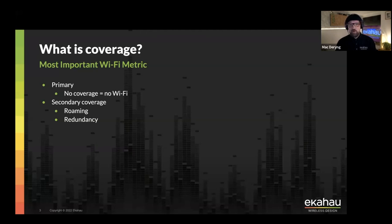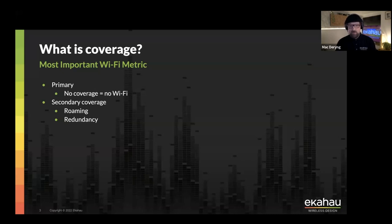We need secondary coverage for multiple different reasons. The most important ones are roaming and redundancy. Roaming is very important because when you are associated to your primary best AP and start moving away, you always want to have secondary coverage ready to roam to with a decent signal strength. For redundancy, when you lose the primary AP, you still want to be connected to Wi-Fi, so you want multiple APs covering the same space.